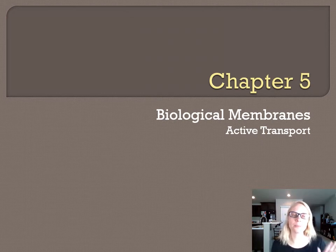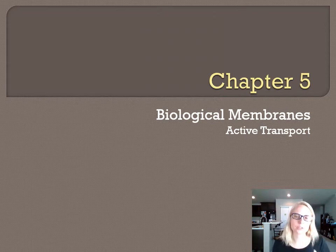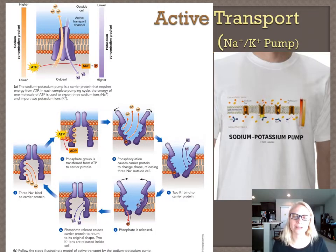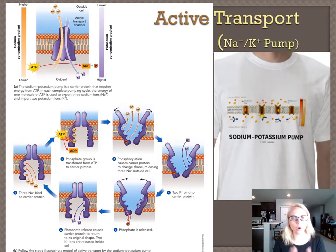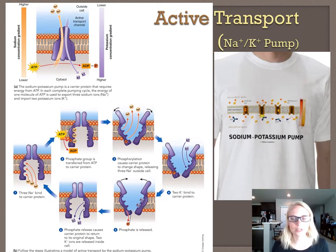The major example of active transport that we're going to talk about is what's called the sodium-potassium pump. This is very common — it's found in all cells, both prokaryotic and eukaryotic. It's something that's been around for a long time because we see it in all different cells: all of our body cells, plant cells, animal cells, they all have a sodium-potassium pump, as do bacteria.